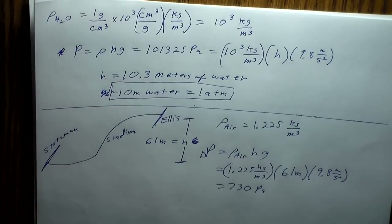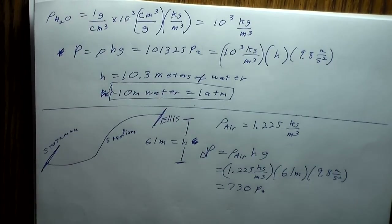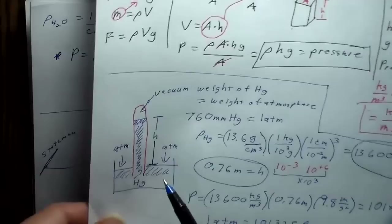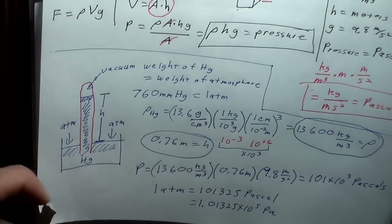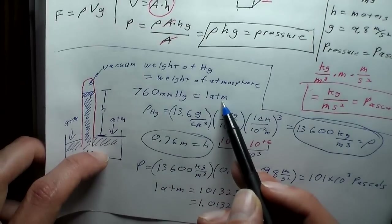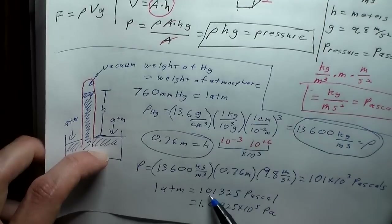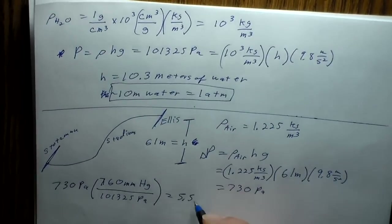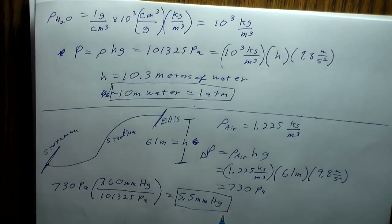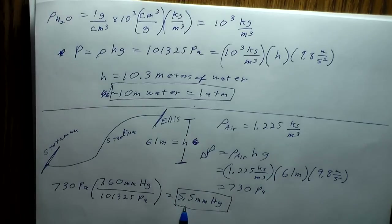We're not used to thinking in Pascals, so let's convert this to millimeters of mercury. Using our conversion — 1 atmosphere equals 101,325 Pascals, which equals 760 mmHg — we get 5.5 millimeters of mercury difference between the top and bottom of the hill. If you had a mercury barometer and hauled it up and down the hill, you'd see the mercury change height by about half a centimeter — easily measurable under controlled conditions.